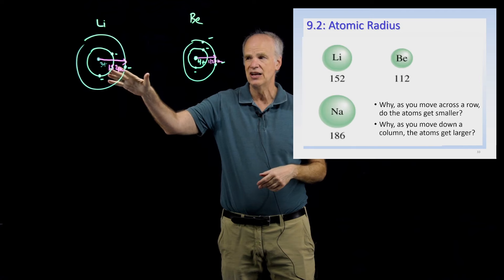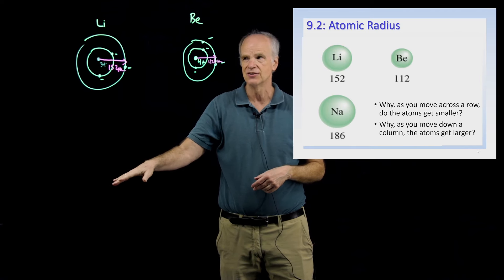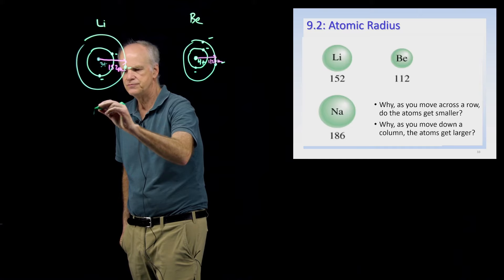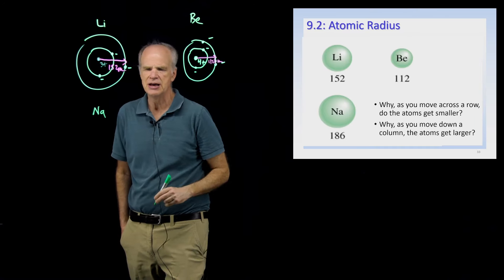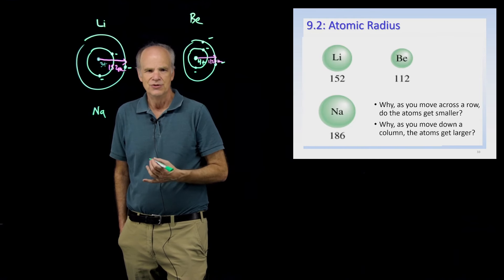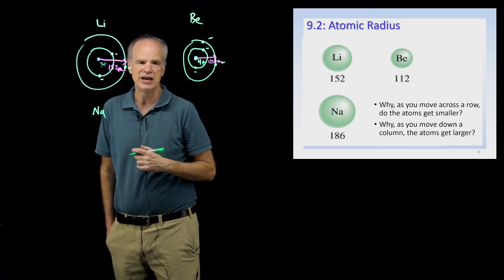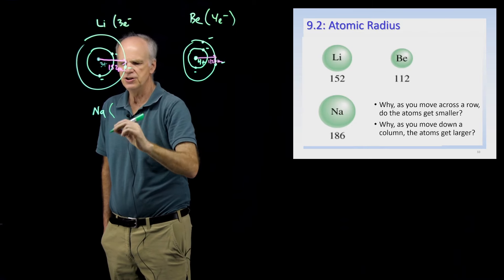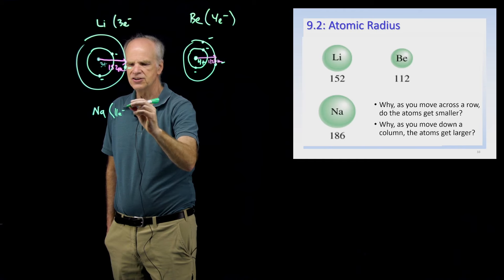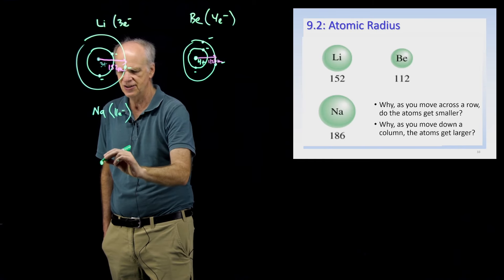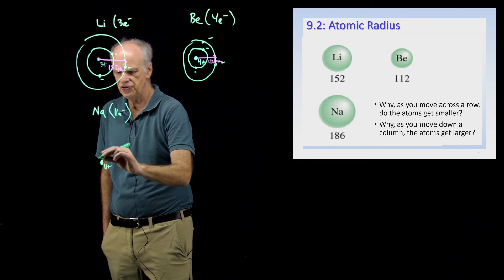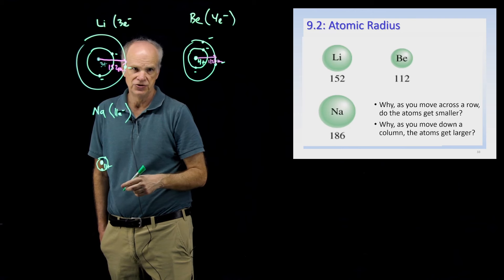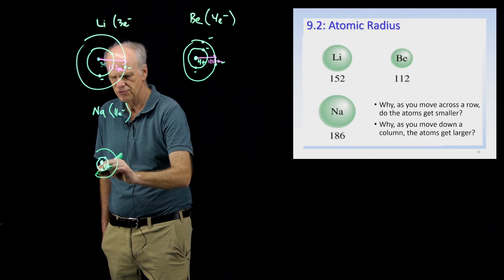Now we understand why the radii get smaller as you go across a row of elements. So why do atoms get larger as you go down a column? Let's look at sodium. Sodium is a much larger atom. The main difference between sodium and lithium is that it has far more electrons: while lithium has three and beryllium has four, sodium — one row down from lithium — has 11 electrons. Here is sodium's nucleus with a lot of positive charge. Its first energy level is brought in quite close, with two electrons in it.